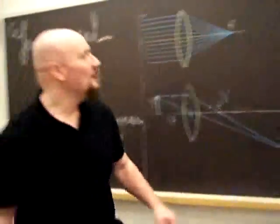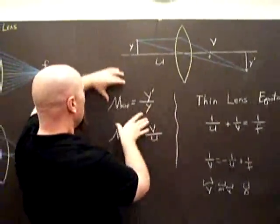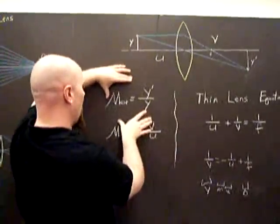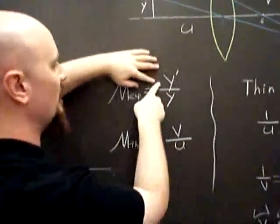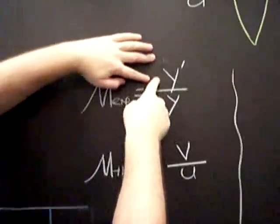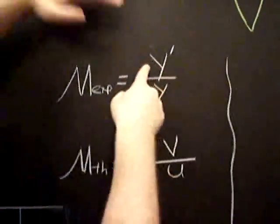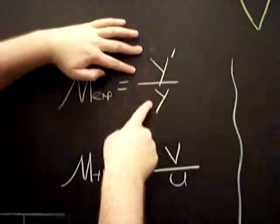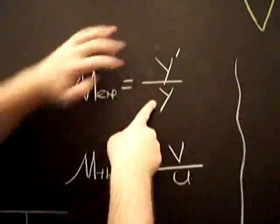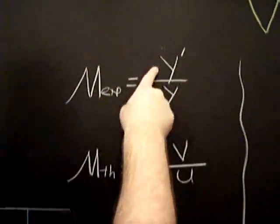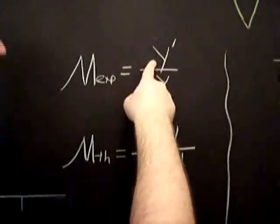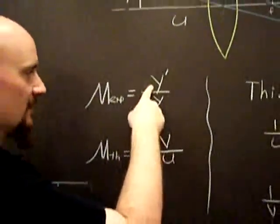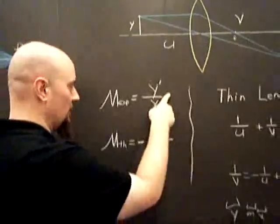So we can get some equations out of this. The first one is the magnification. We'll consider it the experimental magnification. It's just a comparison between how much bigger is the image compared to the object. It's just a ratio. And because it's inverted, Y prime will always be negative for us today. All your Y primes will be negative today because it's inverted for this experiment, which means the magnification will be negative.